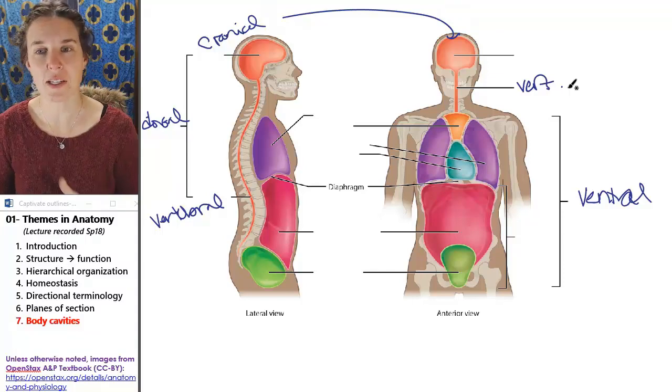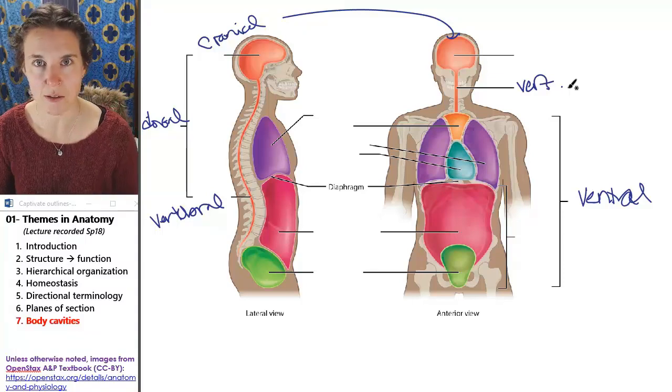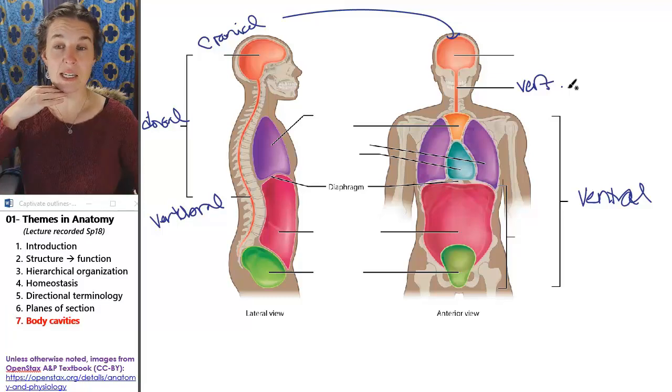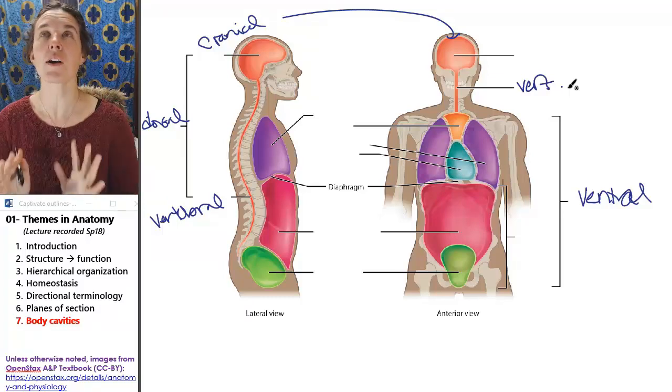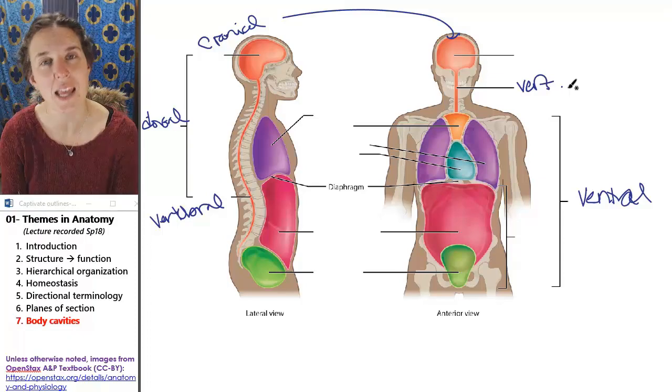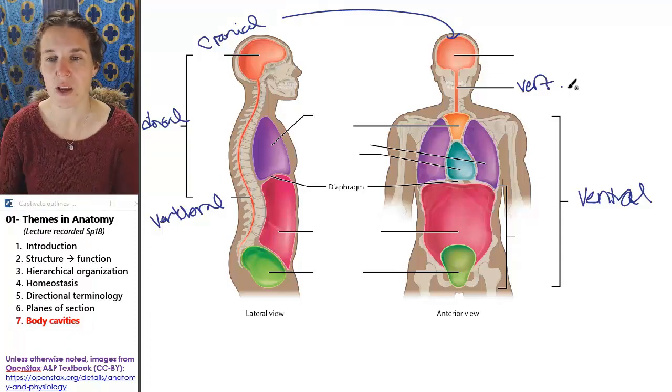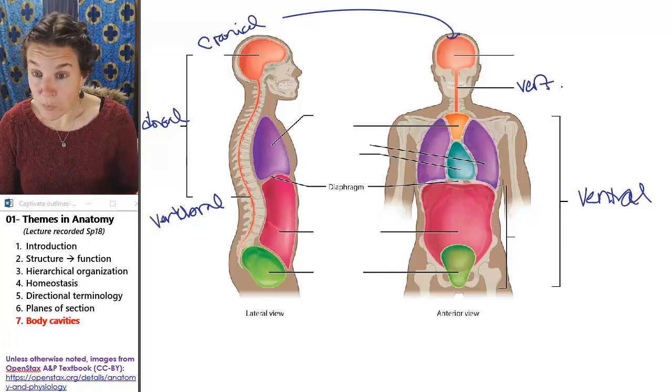The ventral cavity is everything else. So the ventral cavity is everything, all of our other cavities that we're going to talk about is contained within the ventral cavity. So we have two big picture cavities here.